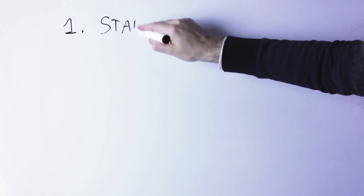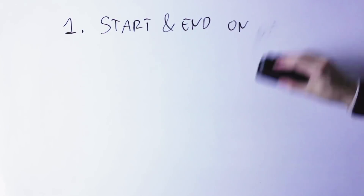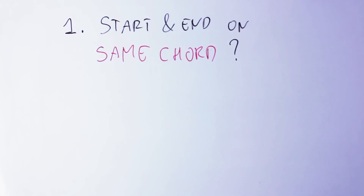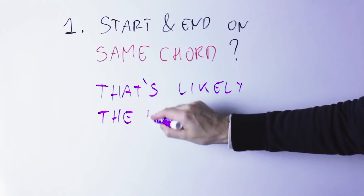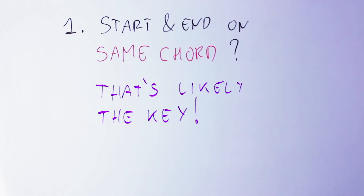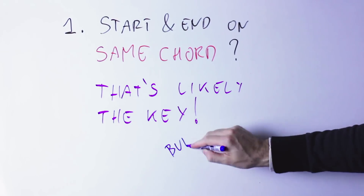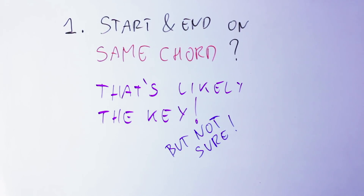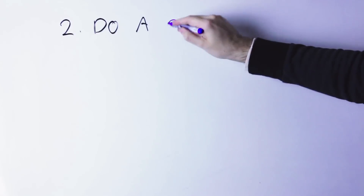Step number one: if the song starts and ends on the same chord, then it's likely — just likely, not certain — that the song is in that key. So if a song starts with a C major chord and ends with C major, it's very likely the song is in C major. If a song starts with G minor and ends with G minor, it's very likely that song is in G minor. Now many songs do not start and end with the same chord, and even if they do, we need to check.